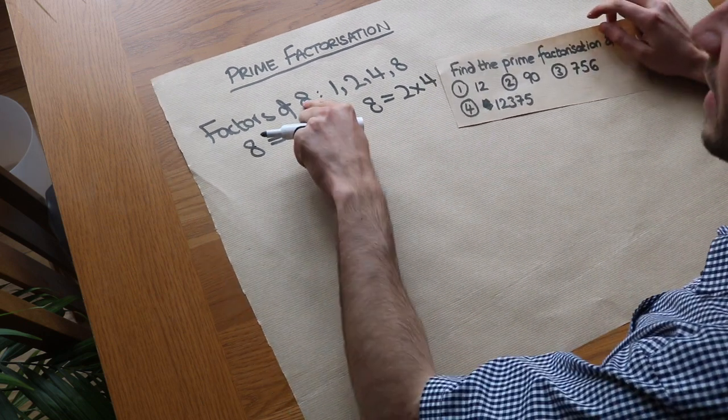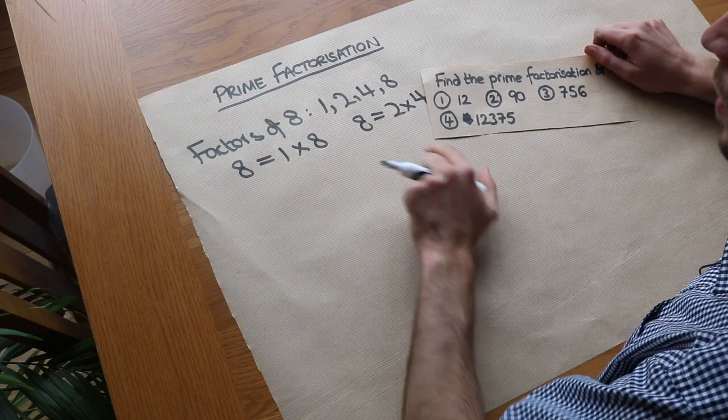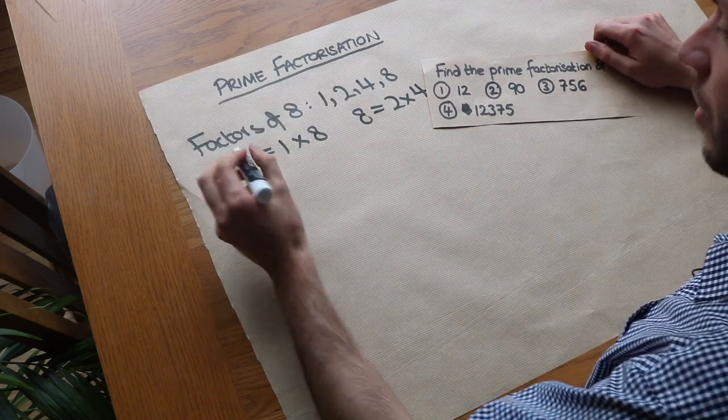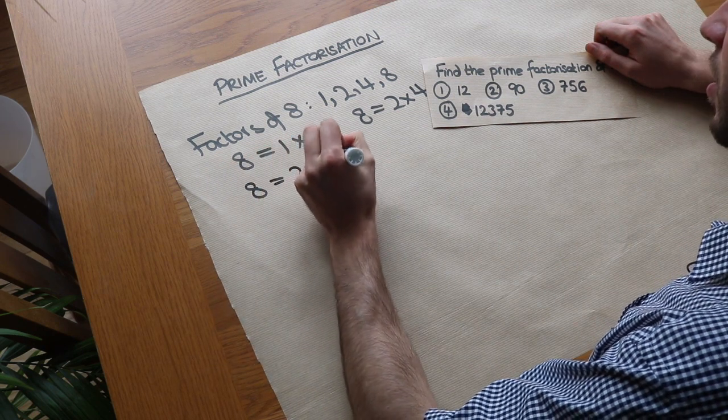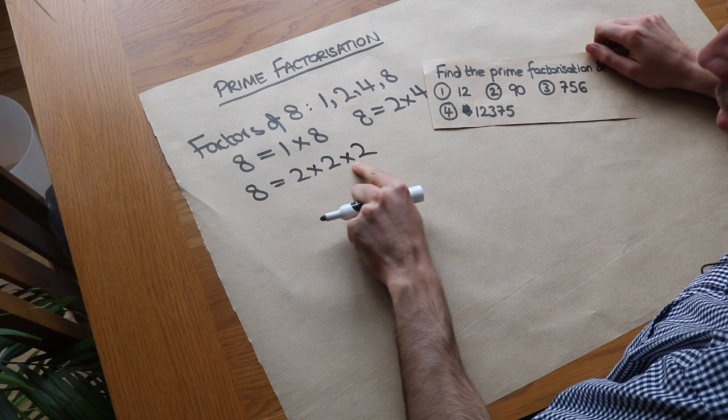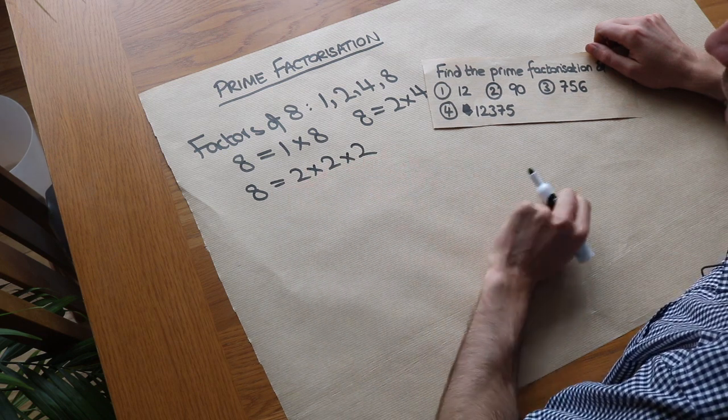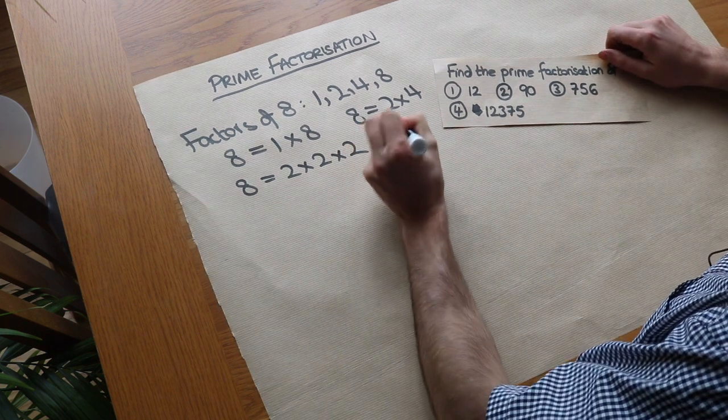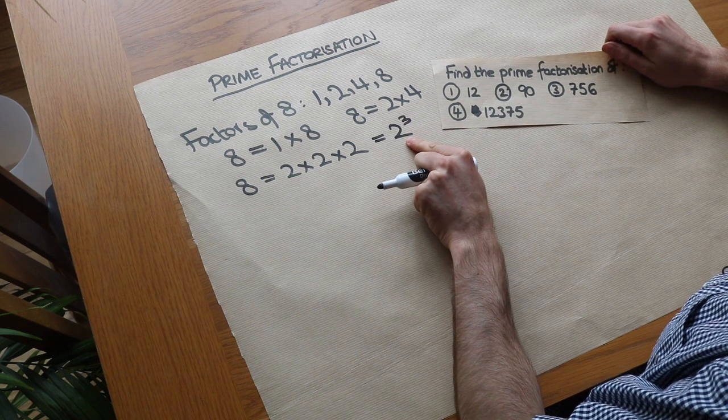But if we want to just write 8 as a product of its prime factors, well the only prime factor of 8 is 2. And we could write 8 as 2 times 2 times 2. We've written 8 as a product, i.e. a multiplication of its prime factors. In this case just 2. And we could write that as 2 cubed because 2 cubed means 2 times 2 times 2.